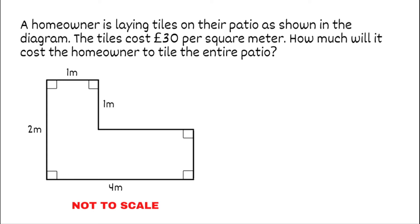For this final one we've got a problem-solving question. A homeowner is laying tiles on their patio. The tiles cost 30 pounds per square meter — how much will it cost to tile the entire patio? All we need to do is find the area of the patio and then calculate the total cost. I'm going to split this compound shape into separate shapes by cutting along here.